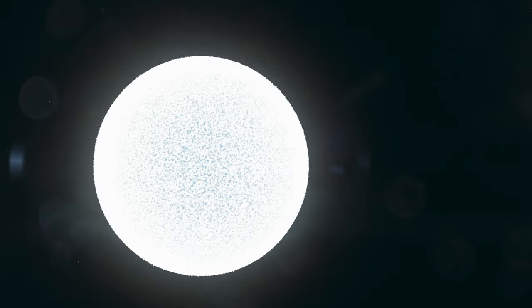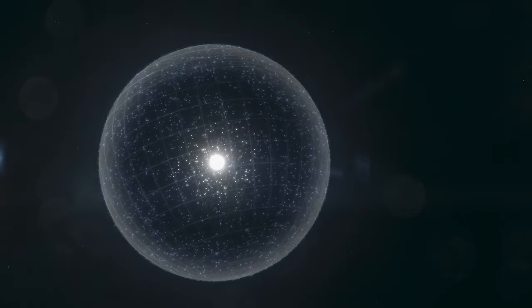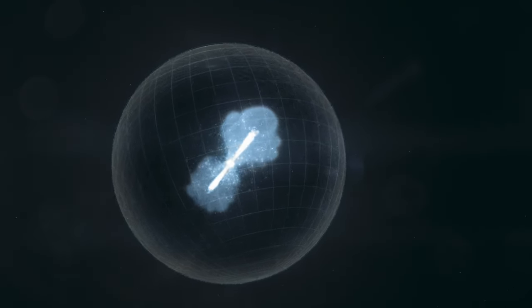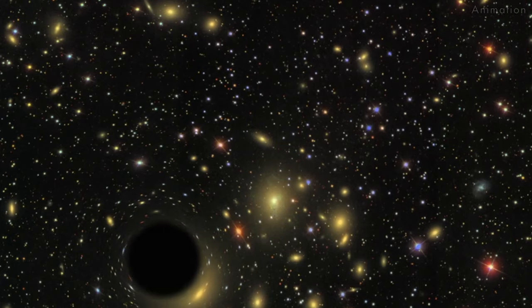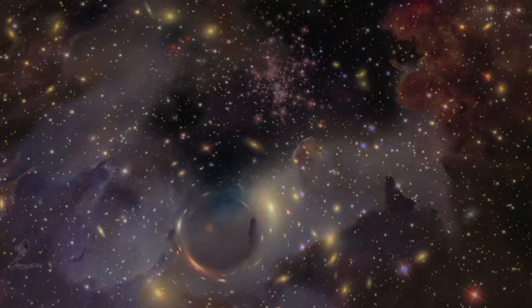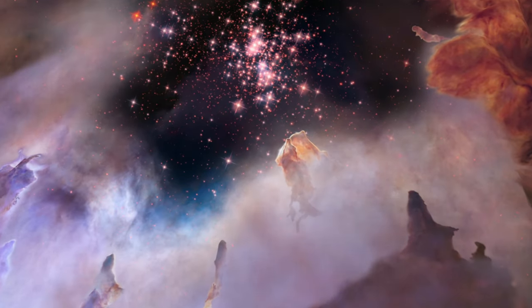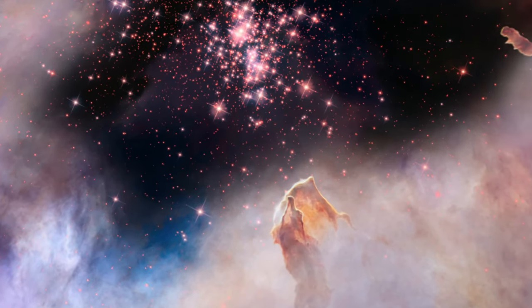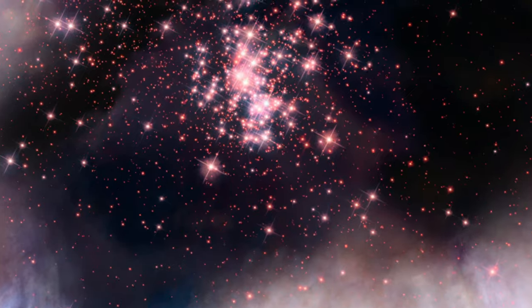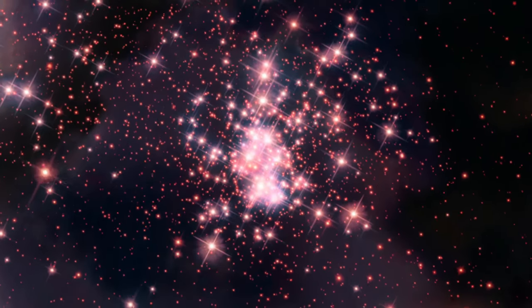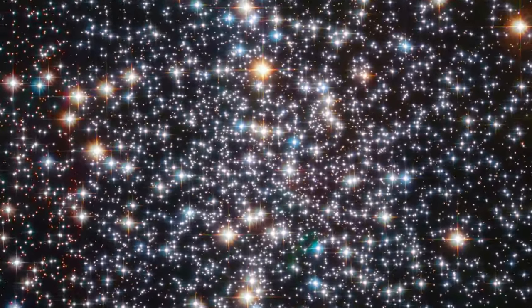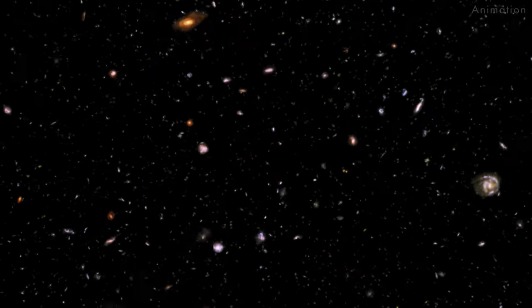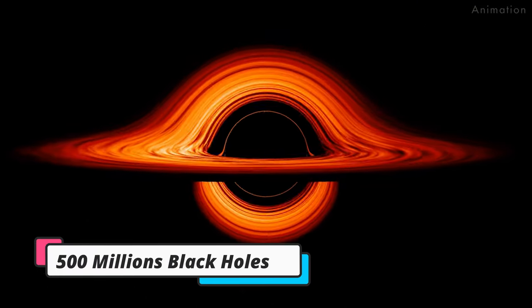When a sufficiently massive star reaches the end of its life, its core will collapse, leading to the possible creation of a black hole. Somewhere around one in about 800 of all stars that ever will form are expected to create a black hole. Based on that number, our Milky Way has somewhere around an estimated 500 million black holes within it.